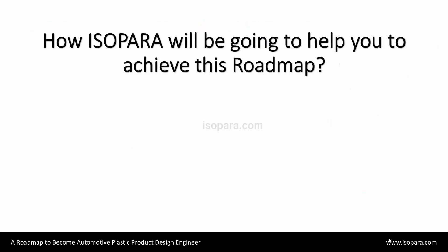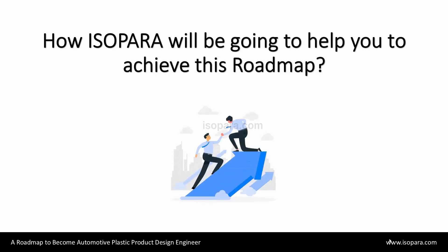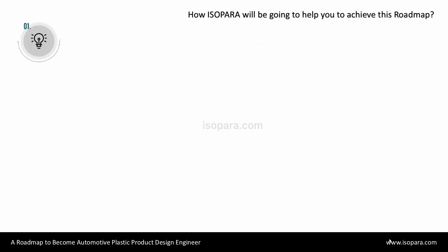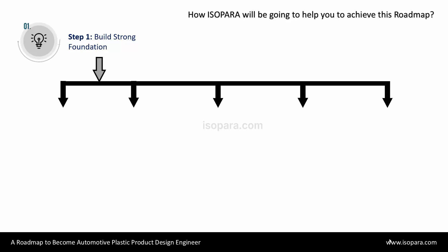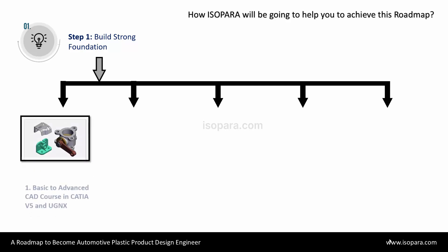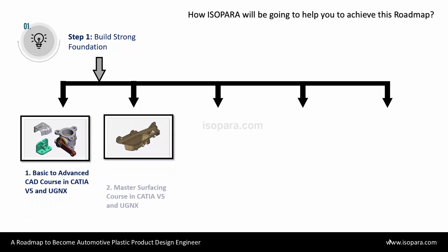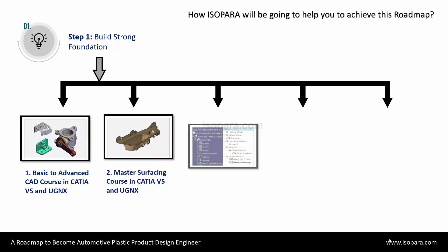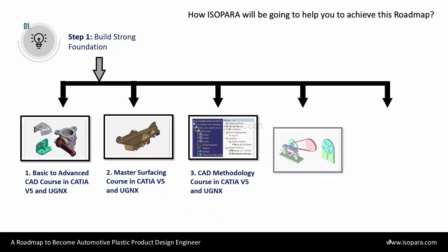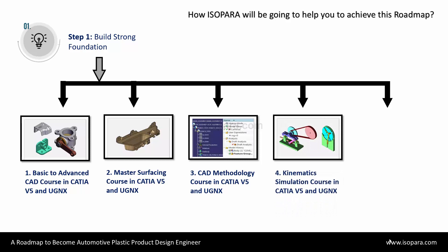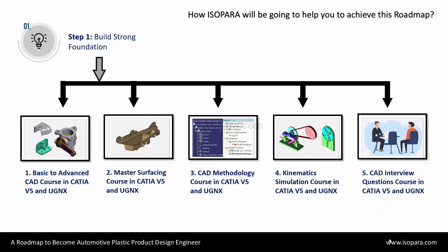Now we are going to see how Isopara will help you in achieving these steps and in becoming an automotive design engineer. Isopara has all the relevant courses mentioned in each step earlier. These courses are made by experts and used by learners globally to study the automotive plastic product design domain. Step 1 courses are Basic to Advanced CAD Courses in CATIA and Unigraphics, Master Surfacing Courses in CATIA and Unigraphics, CAD Methodology Courses in CATIA and Unigraphics, Kinematics Simulation Courses in CATIA and Unigraphics, and CAD Interview Questions Courses in CATIA and Unigraphics.